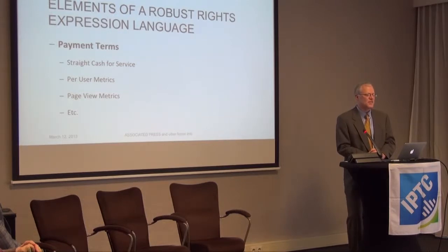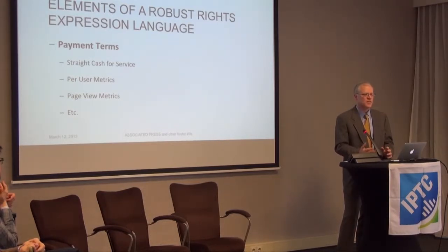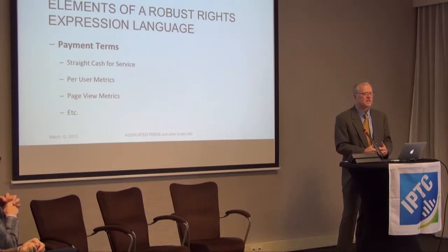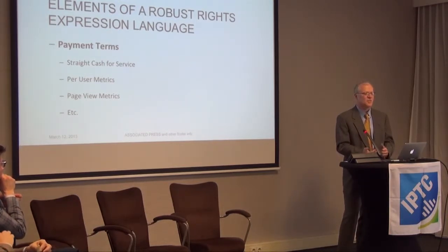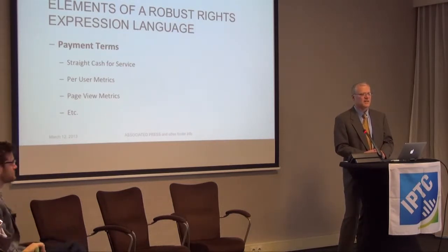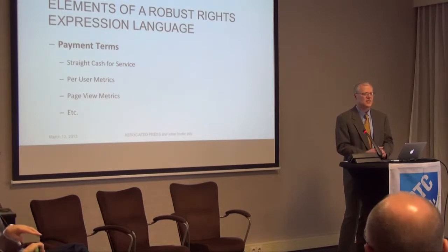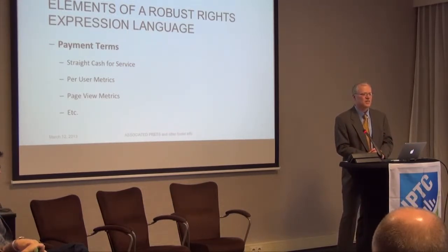Then we get to the really important stuff: how do we get paid. There are a number of different business models, but they fall into a handful of buckets — primarily things like a straight cash payment, per-user metrics, per page view, or other display metrics. These are important because we license our content in a way that is intended to maximize our ability to monetize it, and we want flexibility in how we do that. For clients, it's important because they want to ensure they're paying what they view as an appropriate amount, and only by having a variety of flexible means for measuring content usage can you end up with a negotiated solution that both parties are happy with.